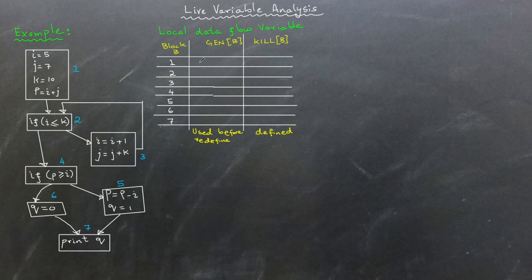Recall that gen B is the set of variables used in block B before being redefined, while kill B is the set of variables defined within block B. Let's start with block 1. In block 1, no variables are used before being redefined. So, gen 1 is an empty set. You might be wondering about the last instruction where i and j are used. You are right to notice that. But since they are not used before their redefinition, they are excluded from gen set. However, the variables i, j, k and p are defined in block 1. So, they are included in kill 1 set.